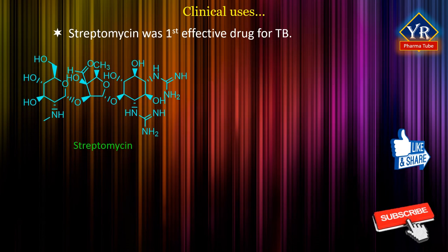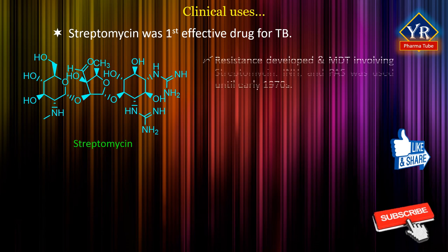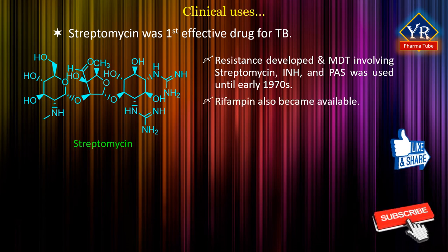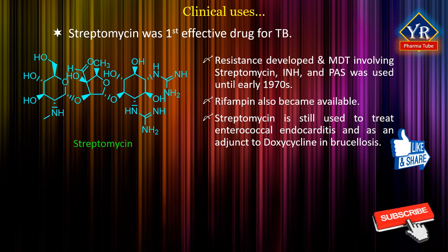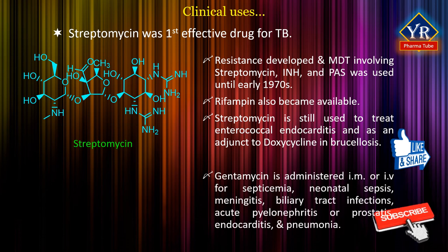Streptomycin was the first effective agent used against tuberculosis. However, resistance soon developed and a multi-drug therapy involving streptomycin, isoniazid and para-aminosalicylic acid was used until the early 1970s. At that point, rifampicin became available allowing different multi-drug therapies to be developed. Streptomycin is now rarely used for the treatment of tuberculosis unless there is a known resistance to isoniazid, in which case it is administered by intramuscular injection. Streptomycin is still used to treat enterococcal endocarditis and as an adjunct to doxycycline in brucellosis.